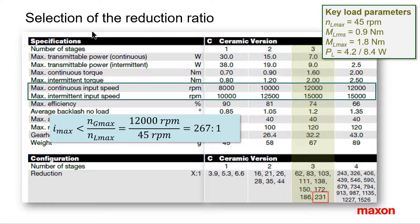The next smaller gearhead reduction available is 231 to 1 with an efficiency of 74%. And that's the gearhead we are looking for.